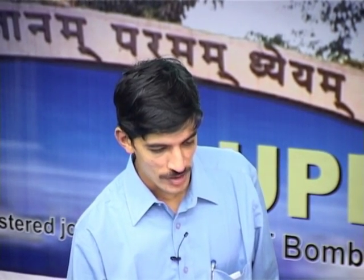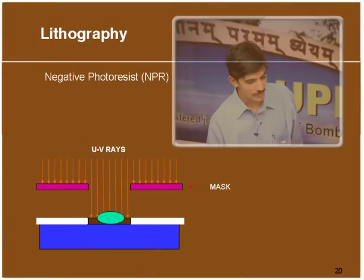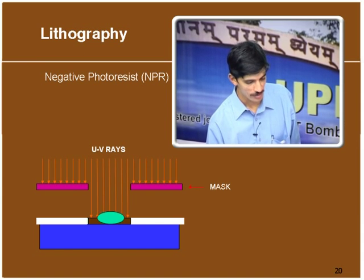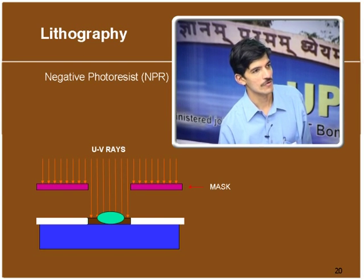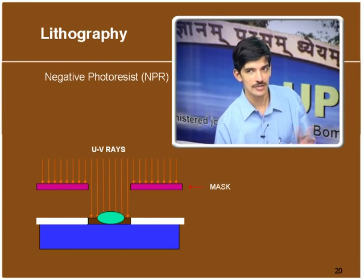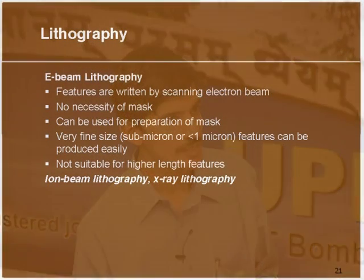You typically post-bake the photo resist to make it hard, so that no unintended chemical effects occur during subsequent processing. In positive photo resist, exposed areas dissolve; in negative photo resist, it is the opposite — exposed areas remain and unexposed areas dissolve. These are the two variants of photo resist used in mask-based lithography.